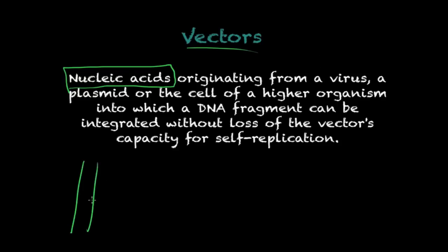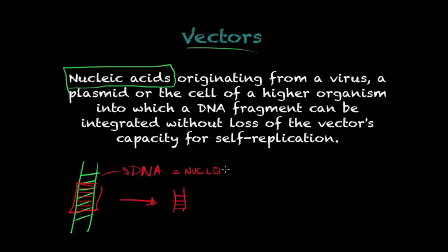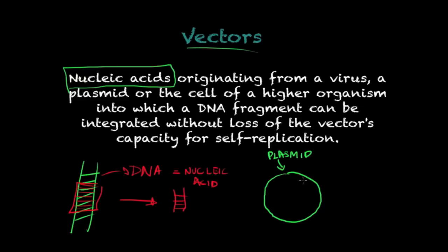My DNA molecule is shaped like a ladder, and I cut a piece I want to clone. Because DNA is a nucleic acid, I need a carrier molecule with the same characteristics — that is, also a nucleic acid — to carry and copy this fragment. That's why vectors are nucleic acid molecules. If I draw one in plasmid form — there are other types of vectors — a plasmid is a nucleic acid molecule with a circular shape, and I introduce my piece of DNA into it.